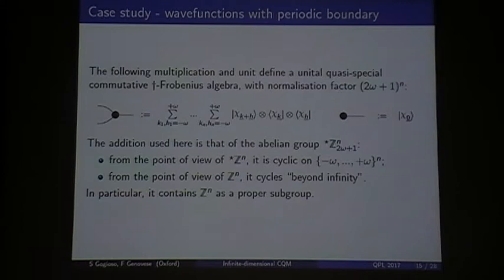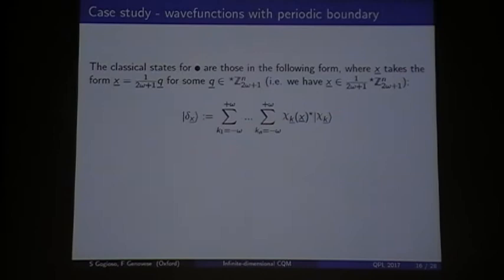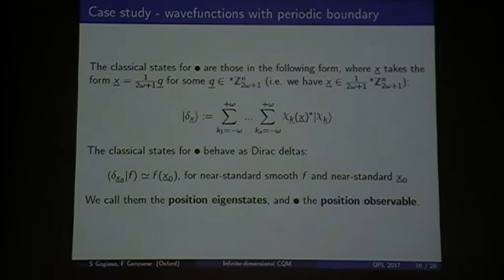And what's happening here is that, basically, this is our abelian group, and this guy, from the non-standard perspective, is a cyclic group. But it's cycling beyond infinity. So, you're basically trolling the situation, and you're saying, Zn is a proper subgroup that lives in here. So this is cyclic, but I'm cycling very far away. For this guy, you have classical states that need to be in this form. When X is in this form, these guys behave like Dirac deltas. And we call them position eigenstates, and this is the position observable.